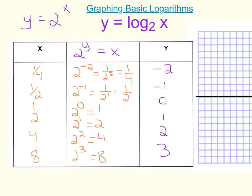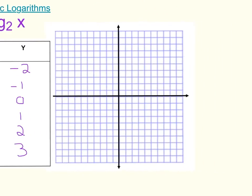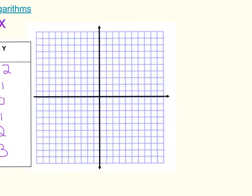Now that I have those points, I can plot them on my graph. So I have the points: x = 1/4, y = −2; x = 1/2, y = −1; x = 1, y = 0; x = 2, y = 1; x = 4, y = 2; and x = 8, y = 3. Remember, the y-axis is the asymptote, so the graph will get really close to the y-axis but never cross it. And then my graph looks like this.